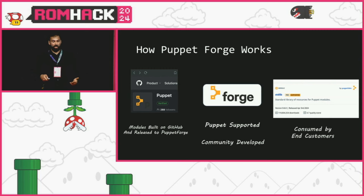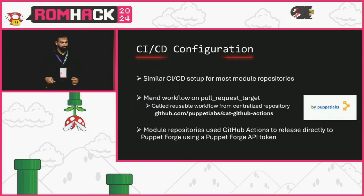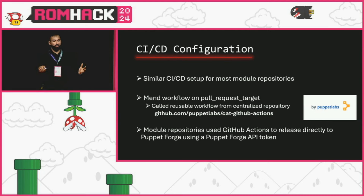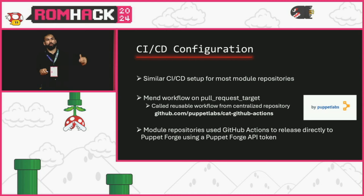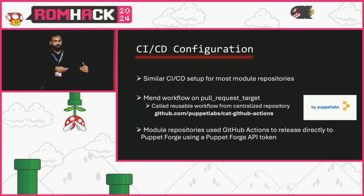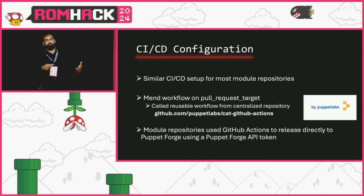There's a lot of exposure and a lot of downloads. Puppet Labs had a central repository called CatKit of Actions containing reusable workflows that all module repositories referenced — this is how they centralized their configuration. The release workflows were set up similarly, and when I looked at them, they were using a Puppet Forge API token to push those releases — remember that.